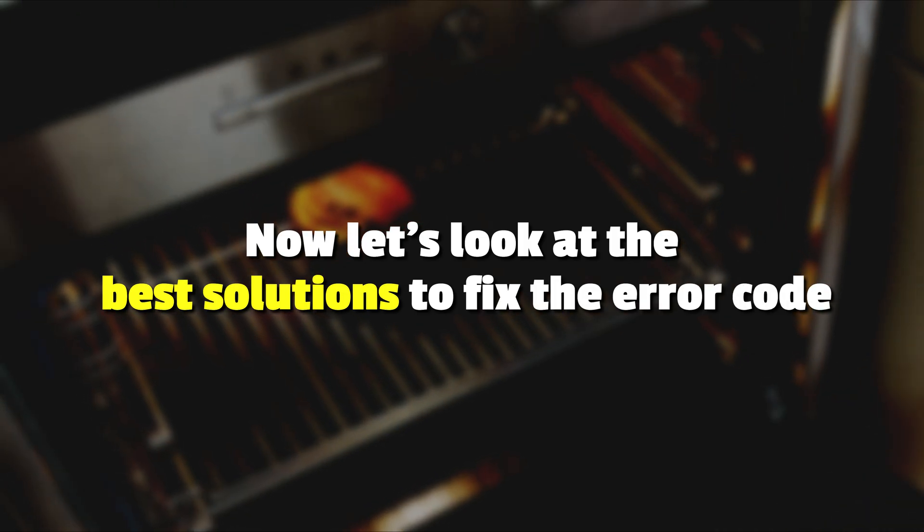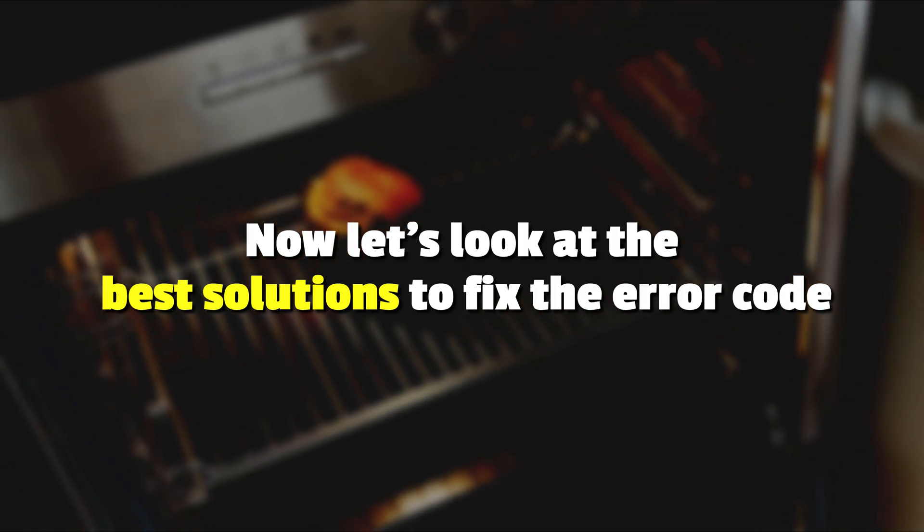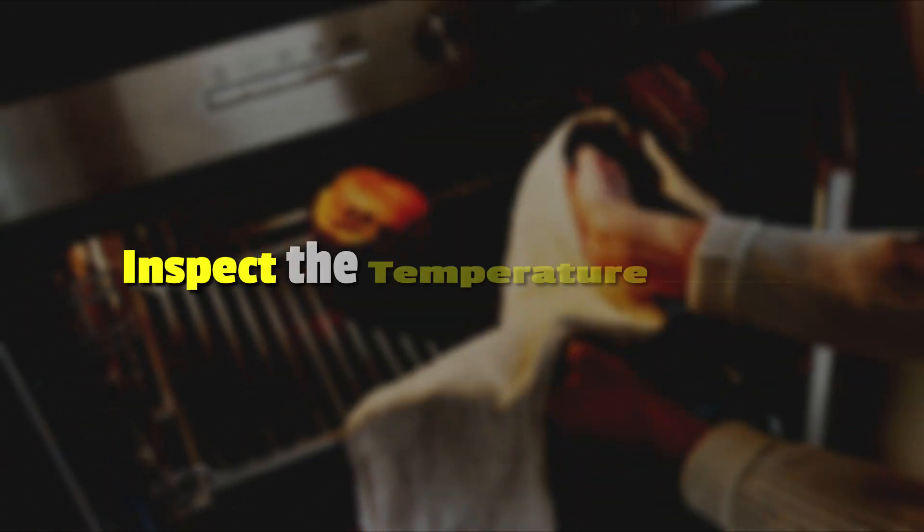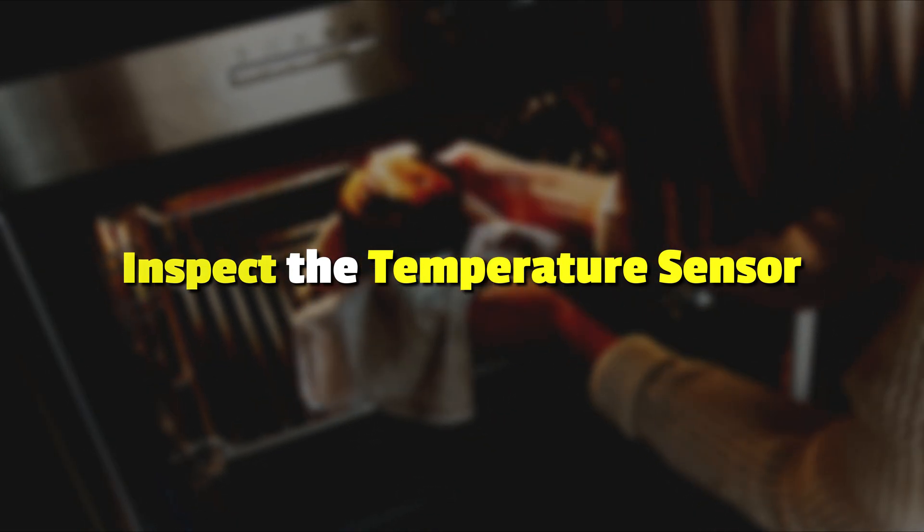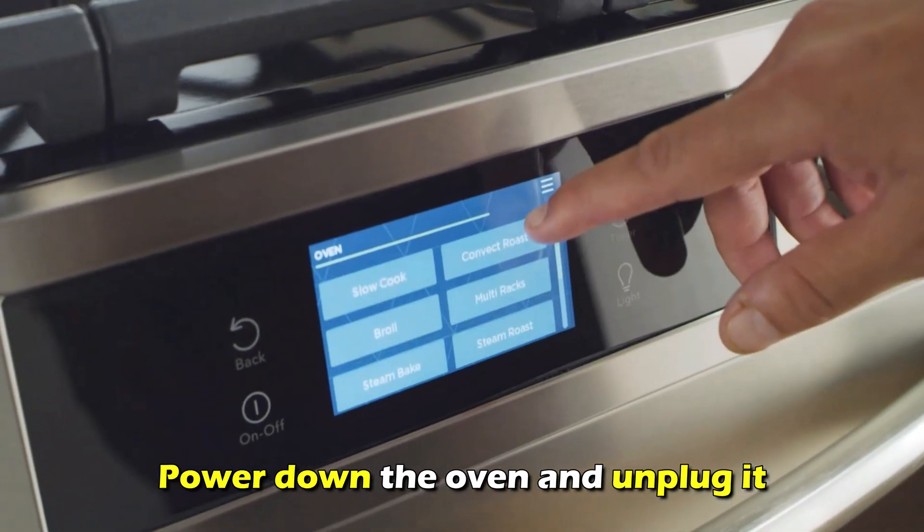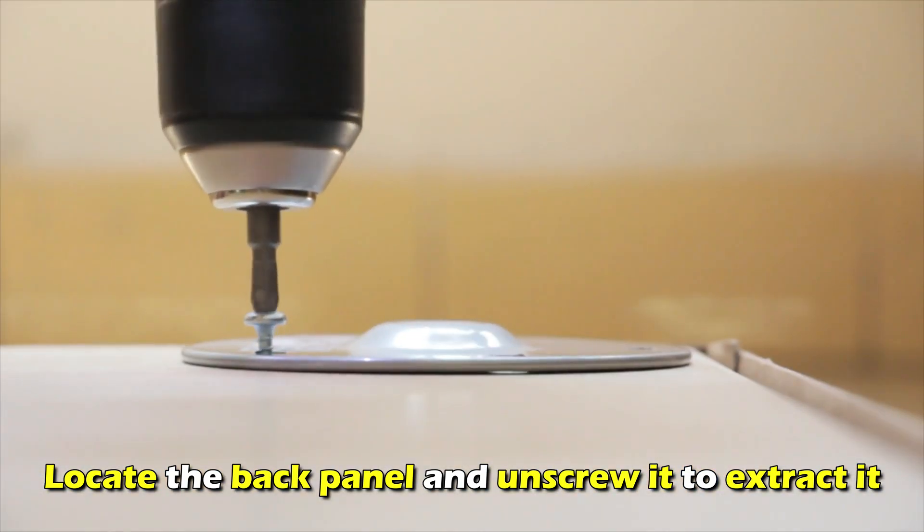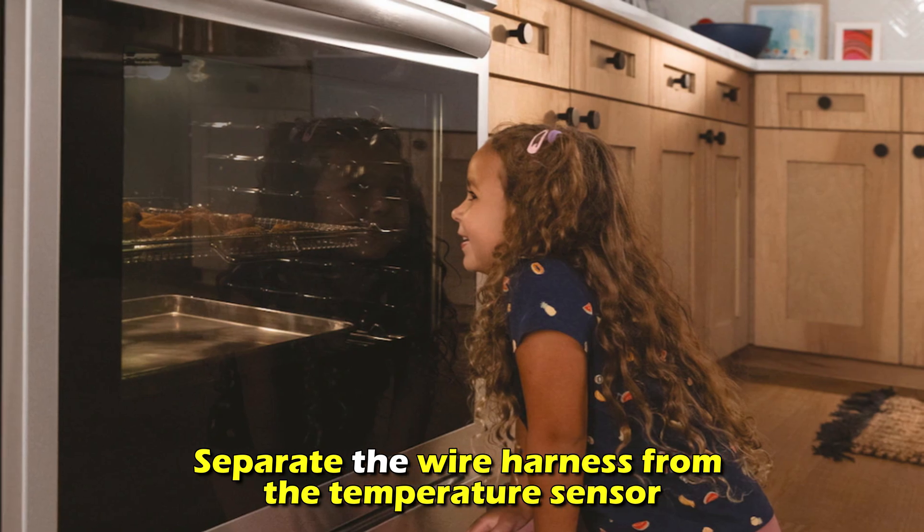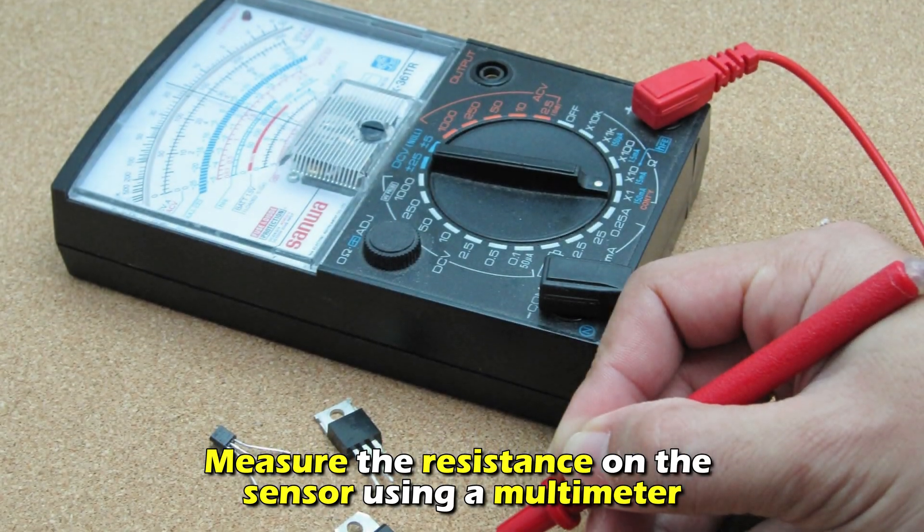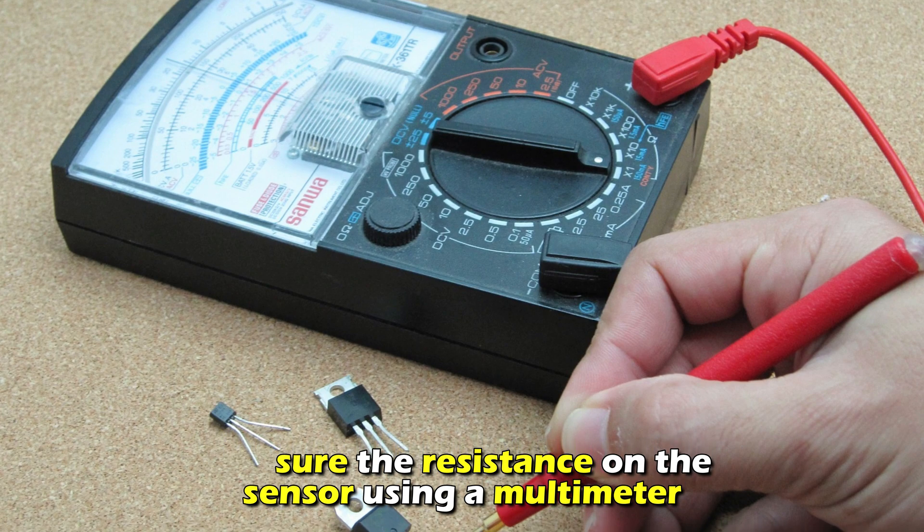Now let's look at the best solutions to fix error code F10. Inspect the temperature sensor. Power down the oven and unplug it. Locate the back panel and unscrew it to extract it. Separate the wire harness from the temperature sensor.